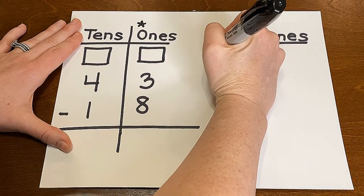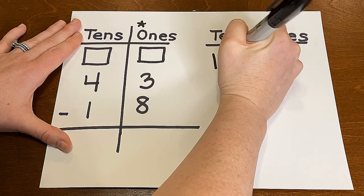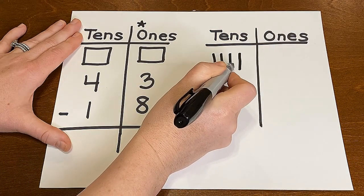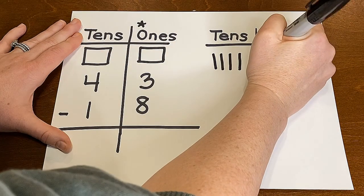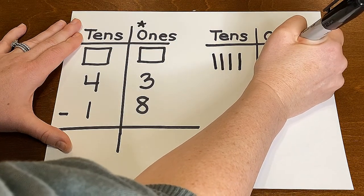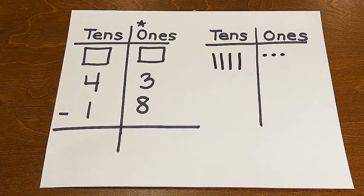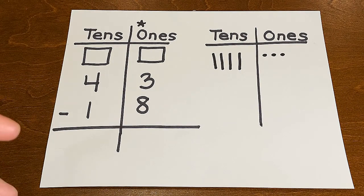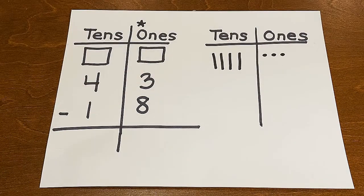Let's draw four tenths. One, two, three, four: ten, twenty, thirty, forty, and three ones. One, two, and three. Remember drawing the bigger number because that's what I'm gonna take away from. I can't put something together in a subtraction problem. I'm removing them. I'm taking it away.